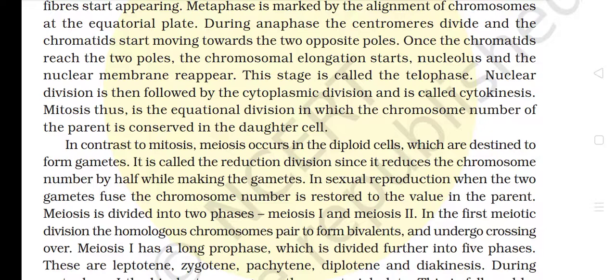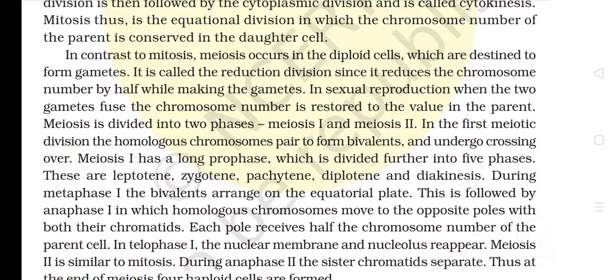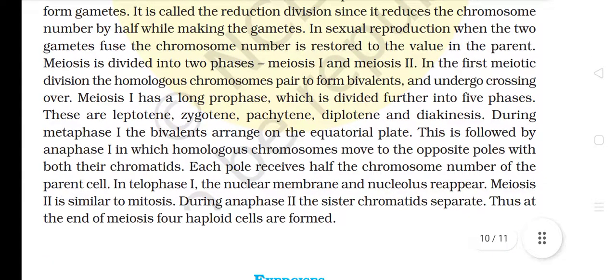This stage is called telophase. Nuclear division is then followed by cytoplasmic division called cytokinesis. Mitosis is thus the equational division in which the chromosome number of the parent is conserved in the daughter cells. In contrast to mitosis, meiosis occurs in the diploid cells which are destined to form gametes. It is called the reduction division since it reduces the chromosome number by half while making the gametes. In sexual reproduction, when the two gametes fuse, the chromosome number is restored to the value in the parent. Meiosis is divided into two phases: meiosis I and meiosis II.